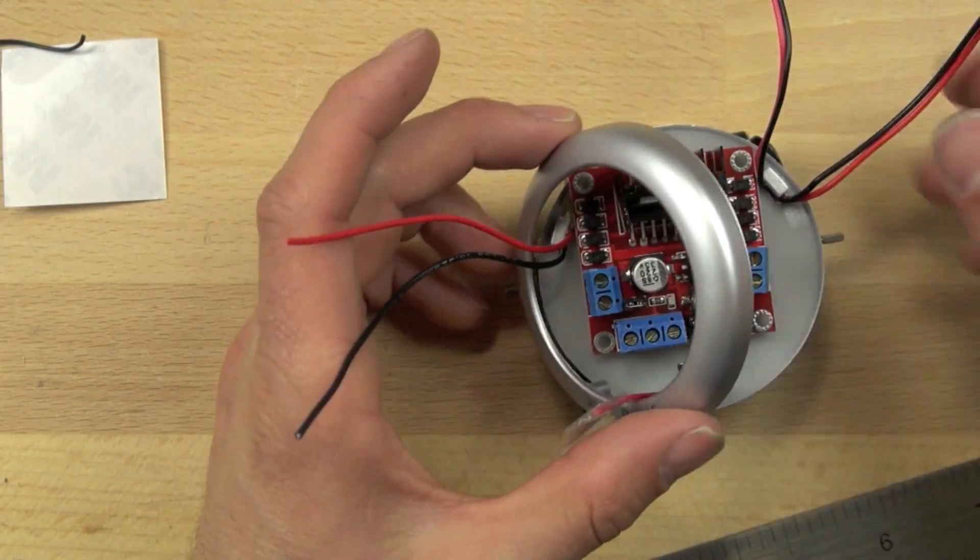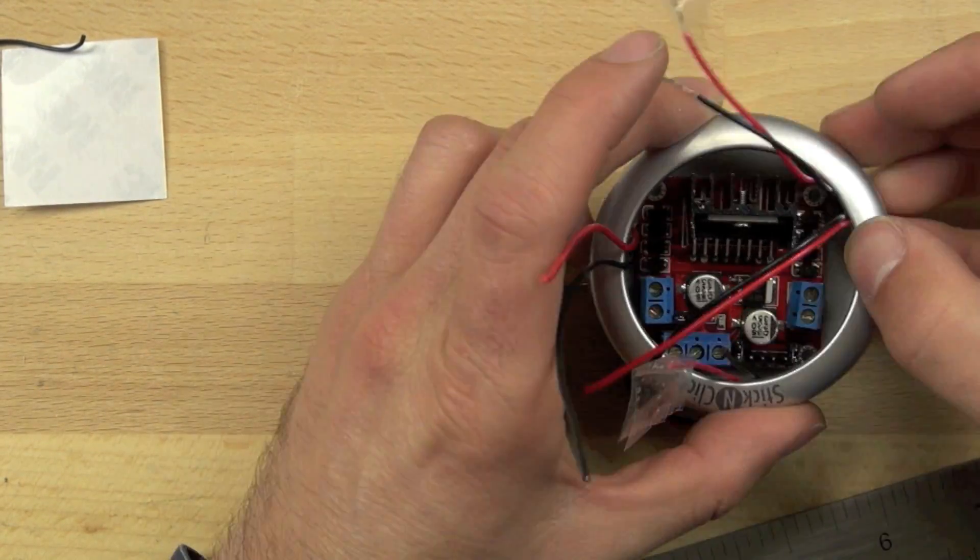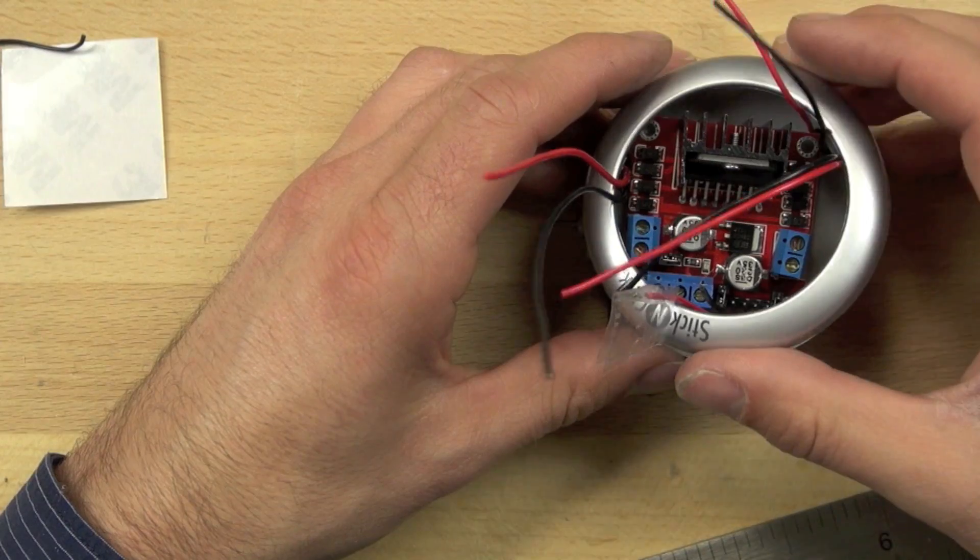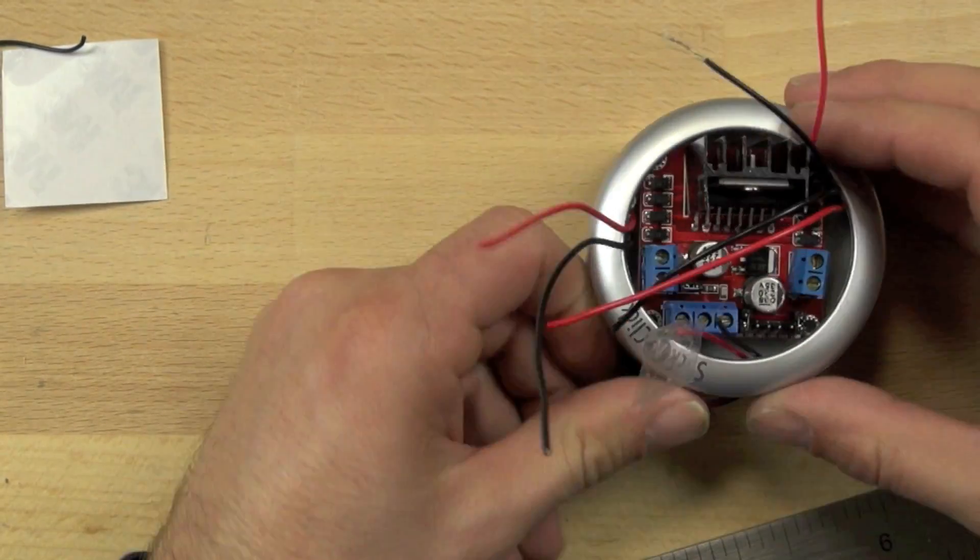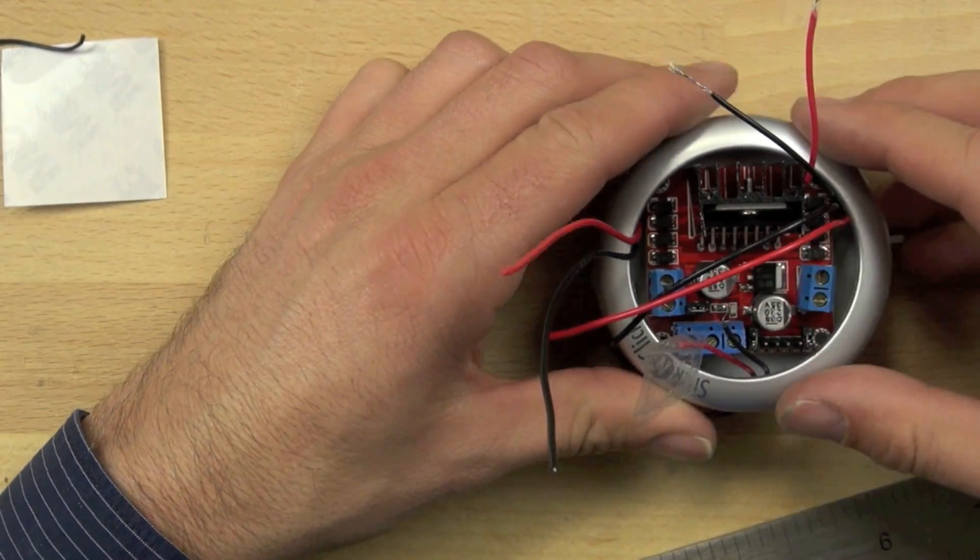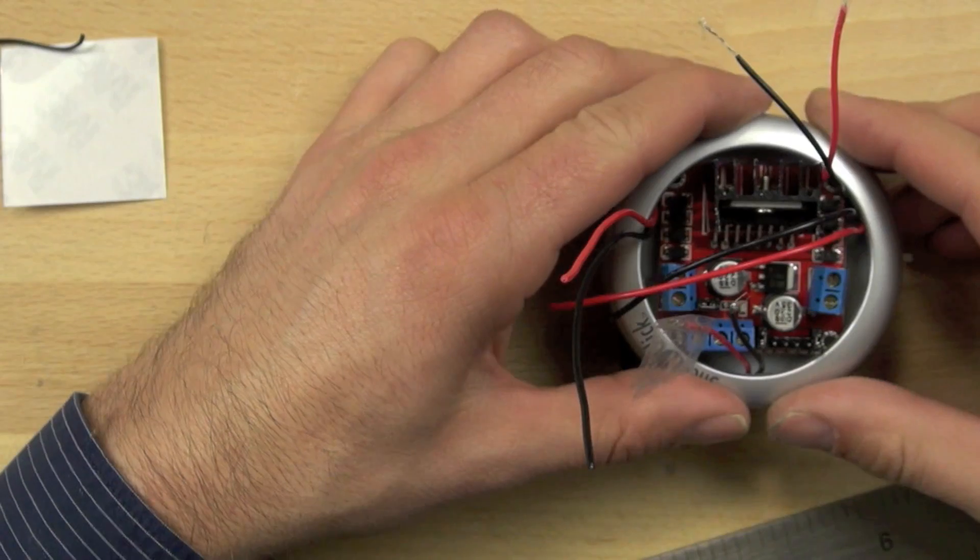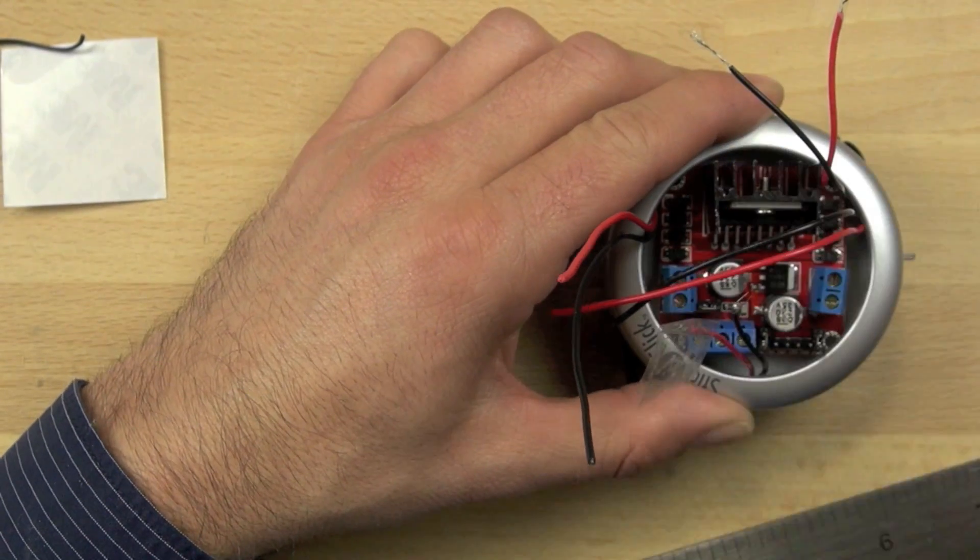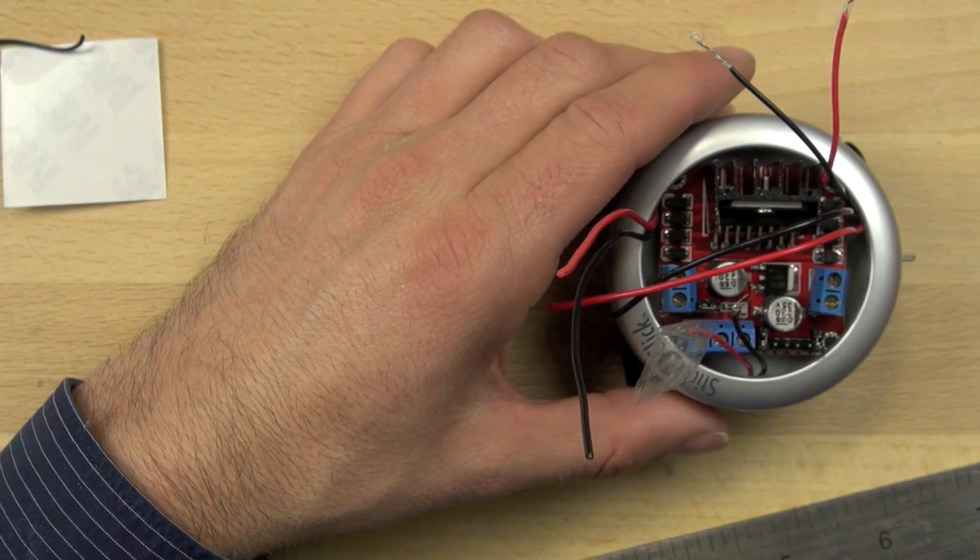So the first thing we need to do is we're going to put our bezel around it. This is part of the original tap light and we just want to make sure it fits and see how the L298 fits in there. It's a pretty snug fit so it's important to get a sense for how the bezel is going to go around it.